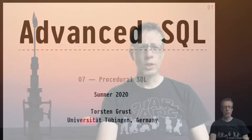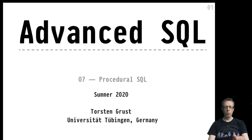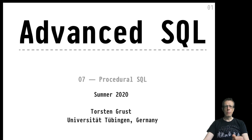But things will change in this particular chapter. This is Chapter 7 on procedural SQL. We will take a completely different approach at expressing complex algorithms and complex computation close to the data. The overall goal remains the same — it's still our goal to move more computation closer to the data.